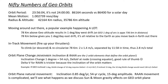Let's look at some of the nifty numbers of geo-orbit. The orbit period of a geo-orbit is 23 hours, 56 minutes, and 4 seconds — not 24 hours. The Earth is going around the sun, and it requires a little more rotation to complete that one solar day. You can also express the period in seconds: 86,164 seconds is a geo-orbit. And the mean motion is slightly more than one rev per day.